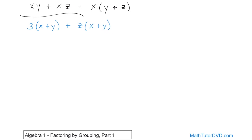Notice you have x plus y here, and this exact same term is present on the other side of the plus sign. Just like we pulled the x out because it was common to both simple terms, we can pull this entire x plus y out because it's common in both places. So we pull out x plus y as the common grouped term and open up another set of parentheses. When we pull it out from the first part, all that's left is the three.